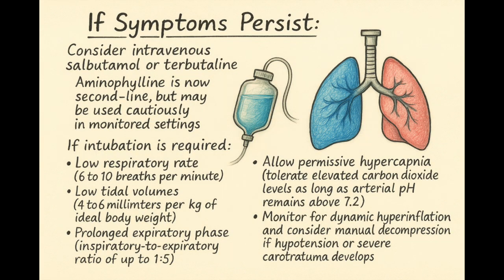Asthma in the ICU — Status asthmaticus is managed using a stepwise approach: high-flow oxygen targeting saturation between 94 and 98%; nebulized salbutamol repeated doses of 2.5–5 mg or continuous infusion; nebulized ipratropium bromide 0.5 mg every 20 minutes for 3 doses; intravenous corticosteroids; intravenous magnesium sulfate 1.2 to 2 grams over 20 minutes; intravenous salbutamol and aminophylline in refractory cases; mechanical ventilation for respiratory failure; and ECMO as a last resort for refractory cases.